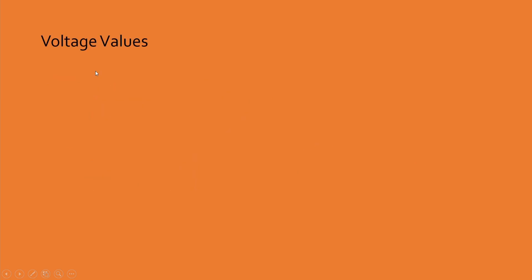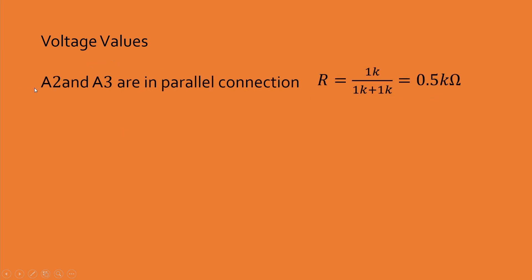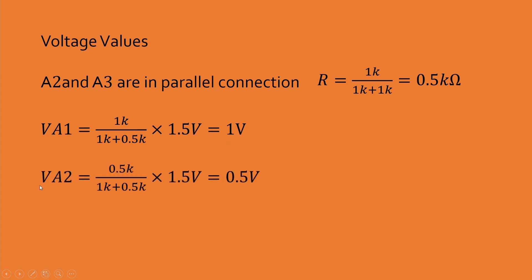Now let's see the theoretical calculation. First, for the voltage values, the A2 and A3 are connected in parallel, so their combined resistance is equal to 0.5k ohm. The VA1 is found using the voltage divider rule, so VA1 is equal to 1V and VA2 is equal to 0.5V. Because resistor A2 and resistor A3 are in parallel, VA2 is equal to VA3 is equal to 0.5V.